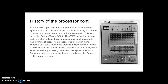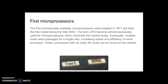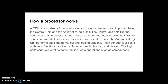This system was still far from the modern computer, but it was a good example of an early multipurpose processor. The first commercially available microprocessors were created in 1971 by Intel, the first model being the Intel 4004. The term CPU became almost exclusively used for microprocessors, which dominate the market today. Eventually, multiple cores were packed on a single chip, increasing speed and efficiency. Today, processors with as many as 54 cores can be found on the market.